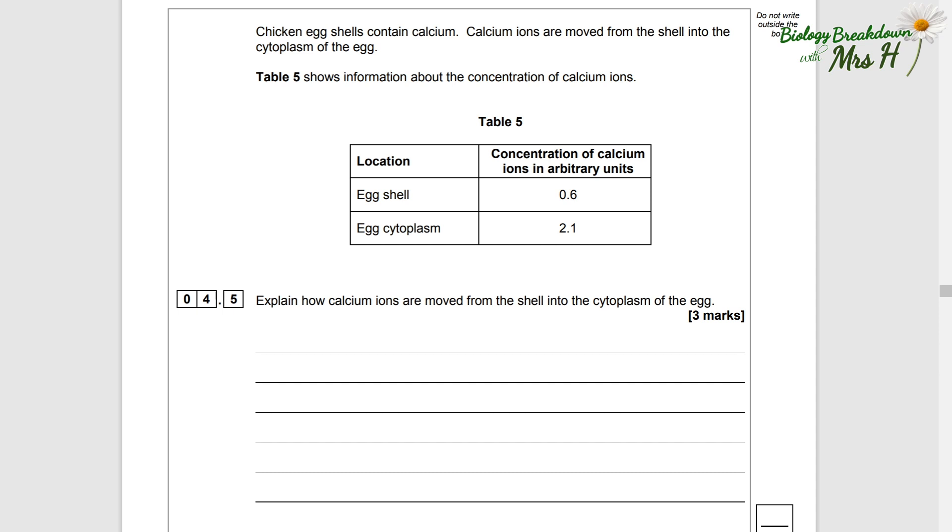Chicken egg shells contain calcium. Calcium ions are moved from the shell into the cytoplasm of the egg. Table 5 shows information about the concentration of calcium ions. So we've got our location: egg shell and cytoplasm. And then the concentration of calcium ions in arbitrary units. So the egg shell has a lower concentration of calcium than the cytoplasm.